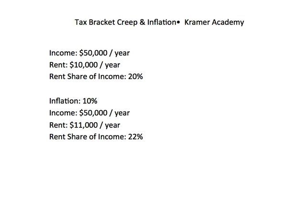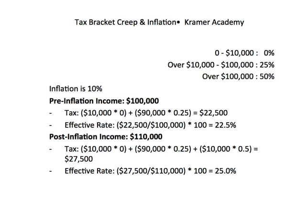So how does this affect income taxes? Let's say we have a simple income tax code with three income tax brackets. Individuals making $0 to $10,000 per year have a 0% rate. Those making between $10,000 up to and including $100,000 have a 25% rate. And anyone making over $100,000 has a 50% rate.